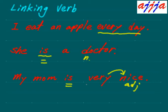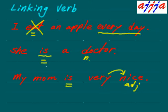I am nice — 'am' is a linking verb. What about 'I eat an apple?' Can you replace 'eat' with an equal sign? 'I equal an apple?' No — I'm not an apple. So that's why this one is not a linking verb. After a linking verb, you use either a noun or adjective.